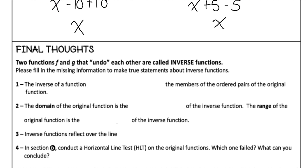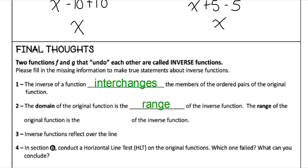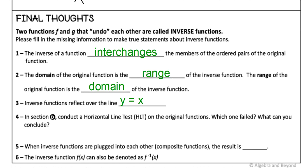Let's sum this all up. Two functions that undo each other are called inverse functions. The inverse of a function interchanges — flips — the members of the ordered pairs of the original function. The domain of the original function becomes the range of the inverse function, and the range of the original becomes the domain of the inverse. Inverse functions always reflect over the line y = x because the x and y values are flipping.